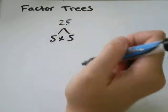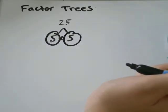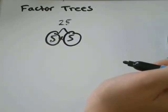25 is 5 times 5. 5 is prime. 5 is prime. So that's it. Sometimes your factor tree is not very exciting. That's okay.